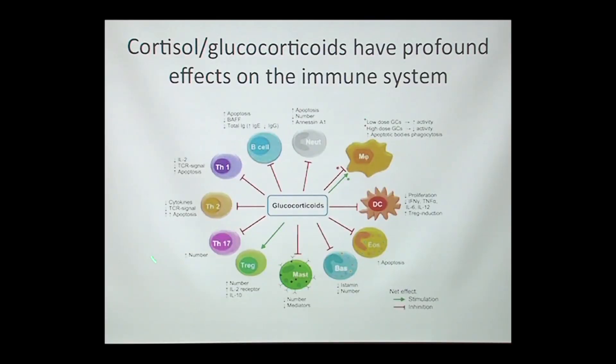So there are effects on all these different organs, and there are also very profound effects on the immune system. Steroids related to cortisol have very potent anti-inflammatory effects and are used all the time in medicine because of that. They affect many different kinds of immune cells in fairly complex ways, and the overall effect — particularly at high doses — is to decrease inflammatory responses.